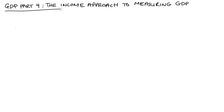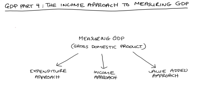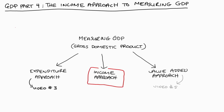Hi everyone. In this video I'm going to talk about the income approach to measuring GDP, so gross domestic product. This is actually video number four in my series on GDP. In practice there are three ways of measuring GDP: the expenditure approach which I went through in video number three, the income approach which is this video, and the value added approach which I'll do in video number five. I'll link to the playlist in the description below if you want to see any of these videos or any others in the series.